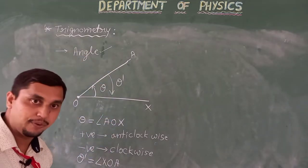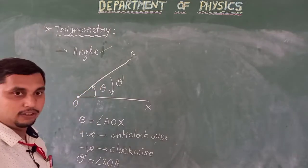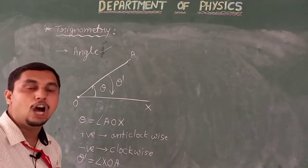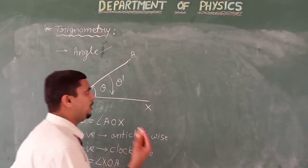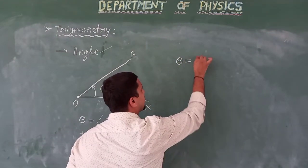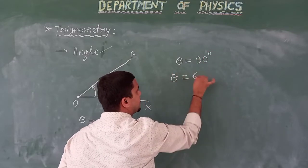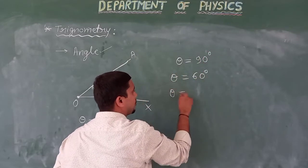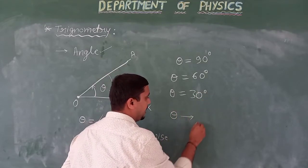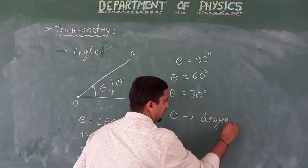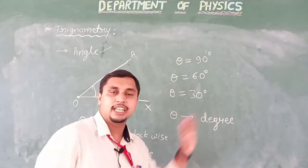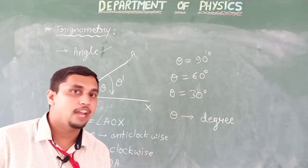We already know how to measure this angle — that is measurements of angle. Usually you already know this theta. For example, theta equals 90 degrees, theta equals 60 degrees, theta equals 30 degrees. That means you are measuring the angle in degrees. Commonly, we measure the angle in degrees.